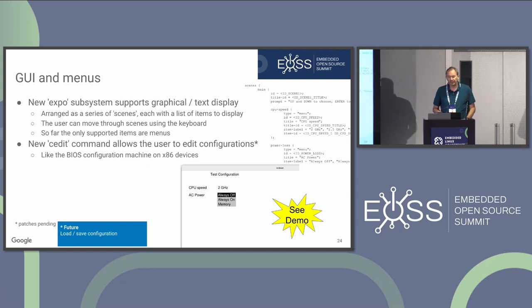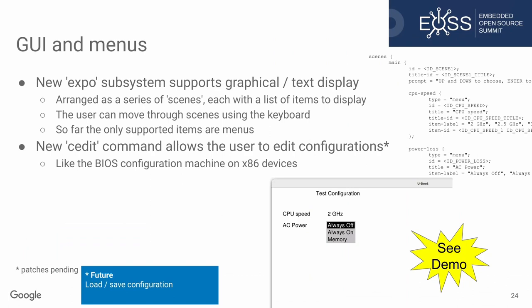There's also a new thing called Expo, which is experimental. An Expo is essentially a set of screens — called scenes — that you can show the user, who can interact with them and move between them. The names are intentionally chosen to avoid clashing with existing code-base terminology. It's a bit like the BIOS menu on an x86 PC — an attempt to provide something similar. It's still under development but you can see elements of it in the code base today.